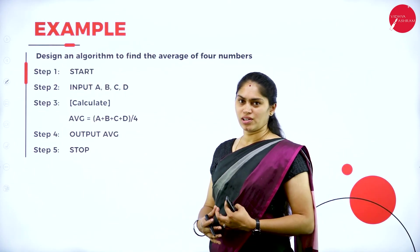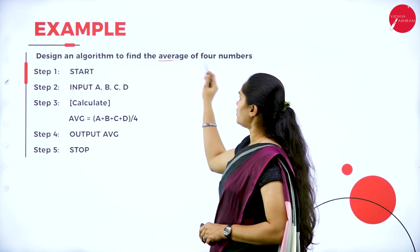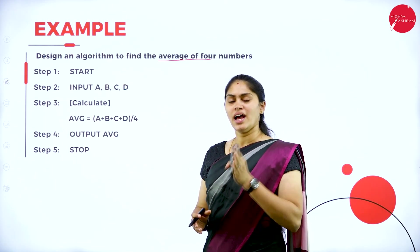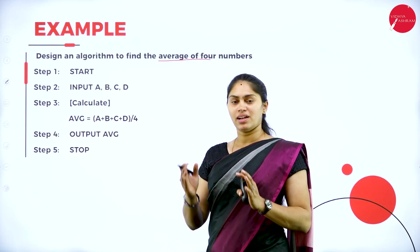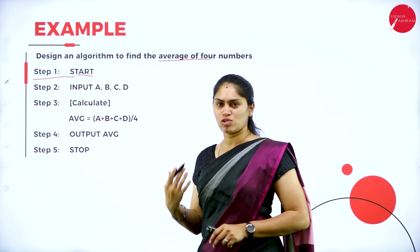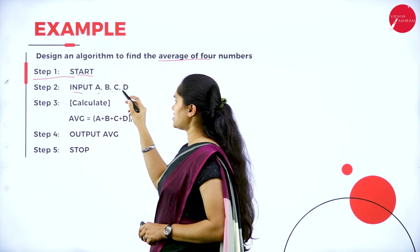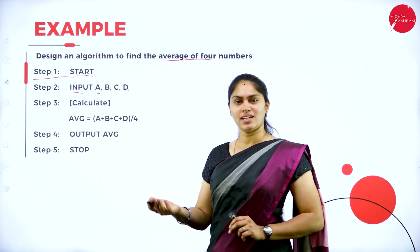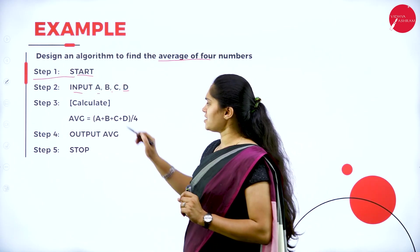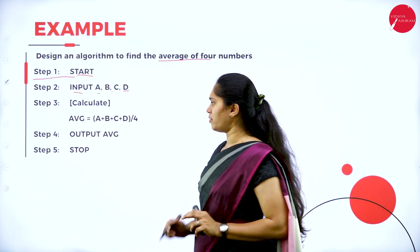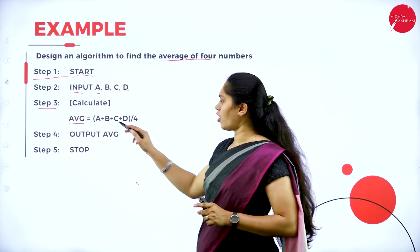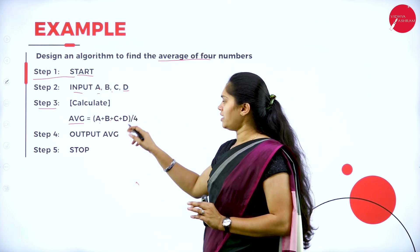Another example: finding the average of four numbers. To find the average, we add all four numbers and divide by 4. Step 1: Start. Step 2: Input A, B, C, D — these are variables representing the four numbers. You can use any variable names, but they should not be numbers. Step 3: Calculate — average = (A + B + C + D) / 4.